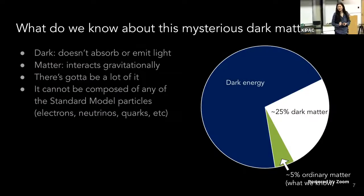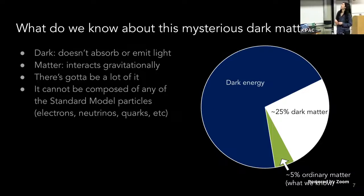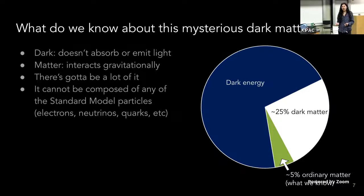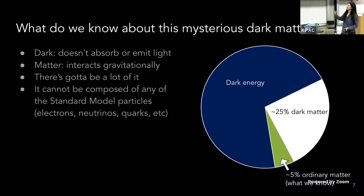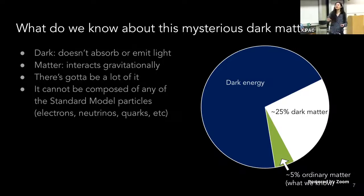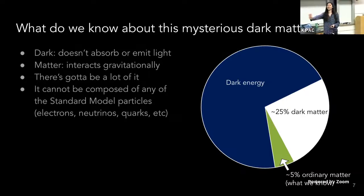So what do we know about this mysterious dark matter? We know that it's dark — it doesn't absorb or emit light that we can see. We know that it's matter: it's massive, it interacts gravitationally with the world. And we know that there must be a lot of it — specifically, there must be five times more dark matter than the light matter that we see. There's also dark energy in the universe, which is something even more complicated. But most of the things around us are a mystery. We also know that dark matter cannot be composed of the standard model particles that we have — we have to look beyond the standard model.